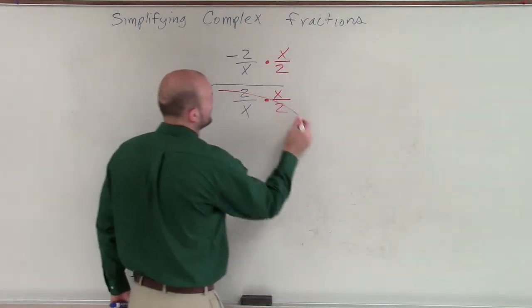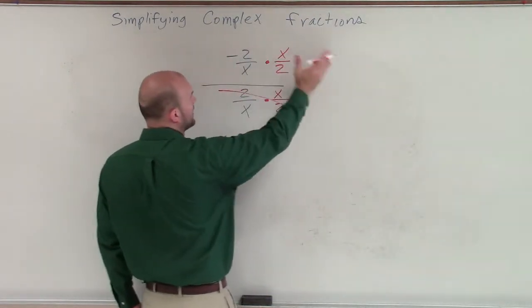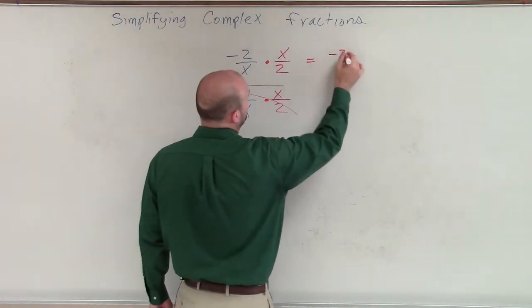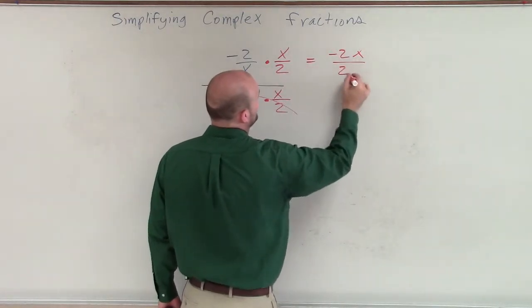So when we multiply this, we know this goes to 1. Then we multiply across, so what we'll have is negative 2x divided by 2x.